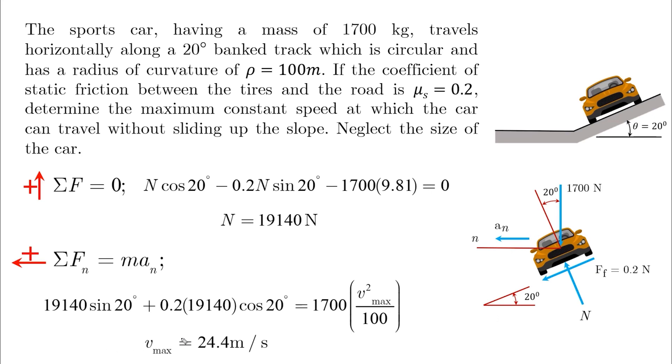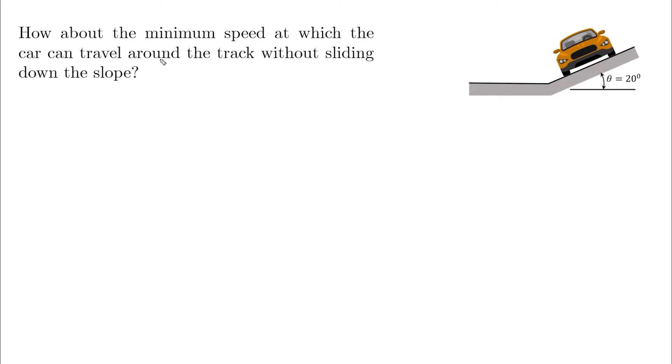How about if the question is asking for the minimum speed at which the car can travel around the track without sliding down the slope? And this slight change in the words of the problem will just change the way you look at the friction. In the first case it was sliding up so the friction was down.